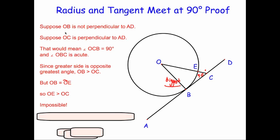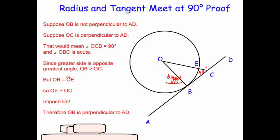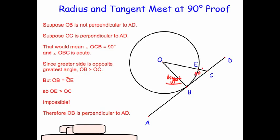Since that's impossible, our assumption that OC is perpendicular to line AD is false — it cannot be true. Therefore, OB, the radius, has to be perpendicular to the tangent. If we repeated this for any other point on line AD except B, we'd find the same impossibility. Therefore, the only place where a 90 degree angle can exist is where the tangent and the radius meet each other — meaning the radius and tangent will always meet at 90 degrees.